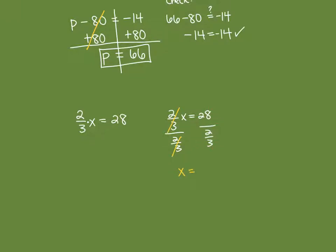On the right side you have 28 divided by 2-thirds, and you must remember to multiply by the reciprocal. However, the easier approach from the start is to remember: dividing by a fraction is the same as multiplying by its reciprocal. So we're going to multiply each side by the reciprocal of 2-thirds, which is 3-halves. Write the right side as 28 over 1 since we're multiplying by a fraction.